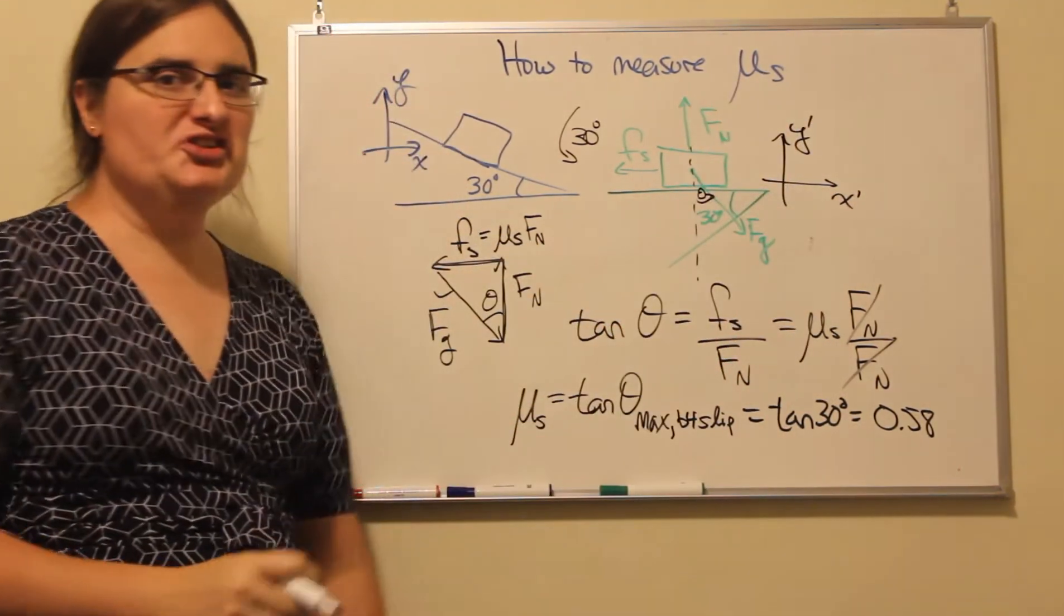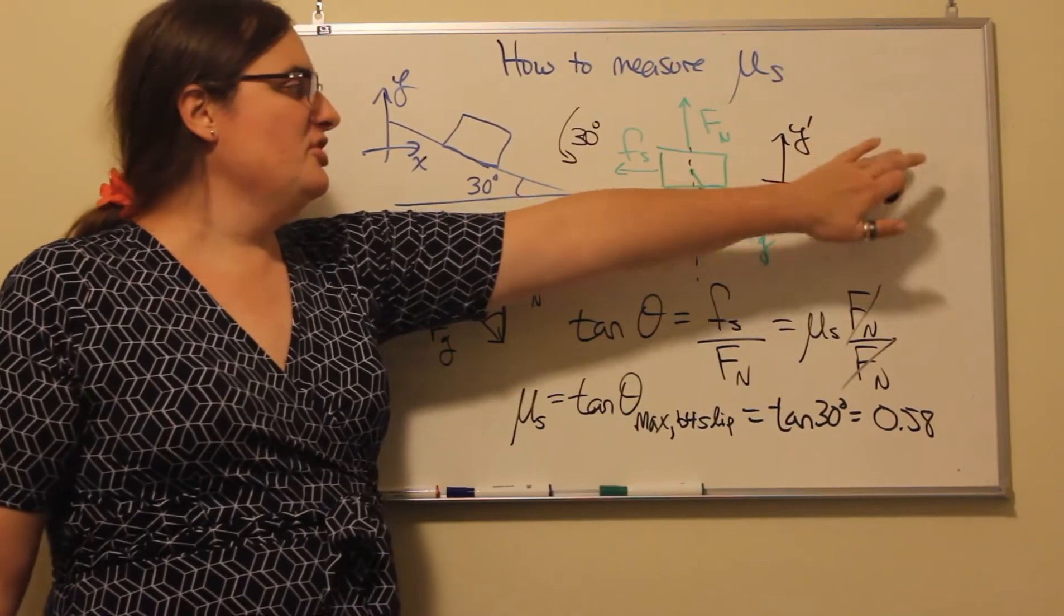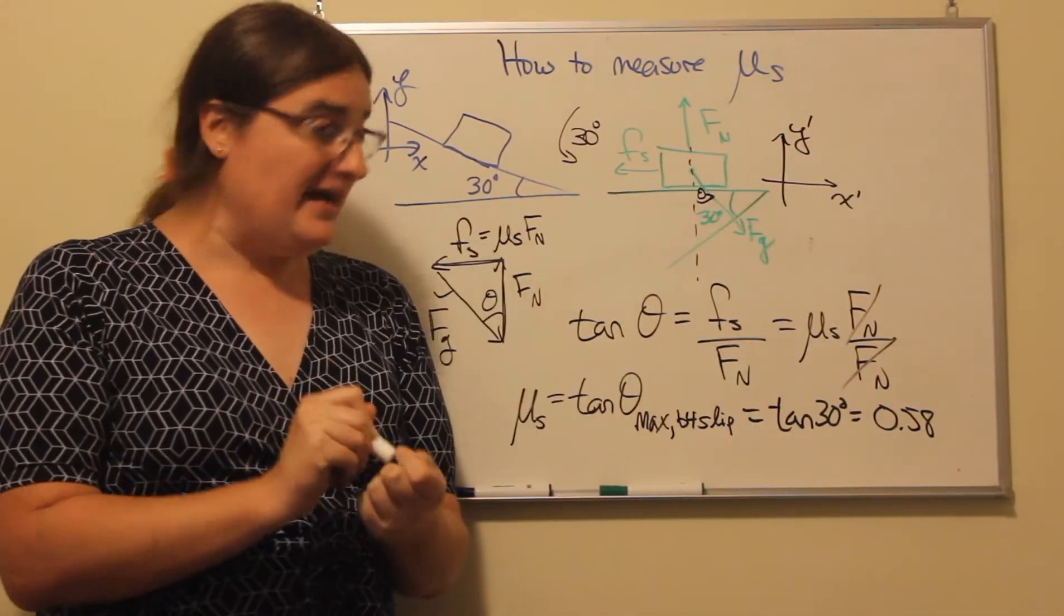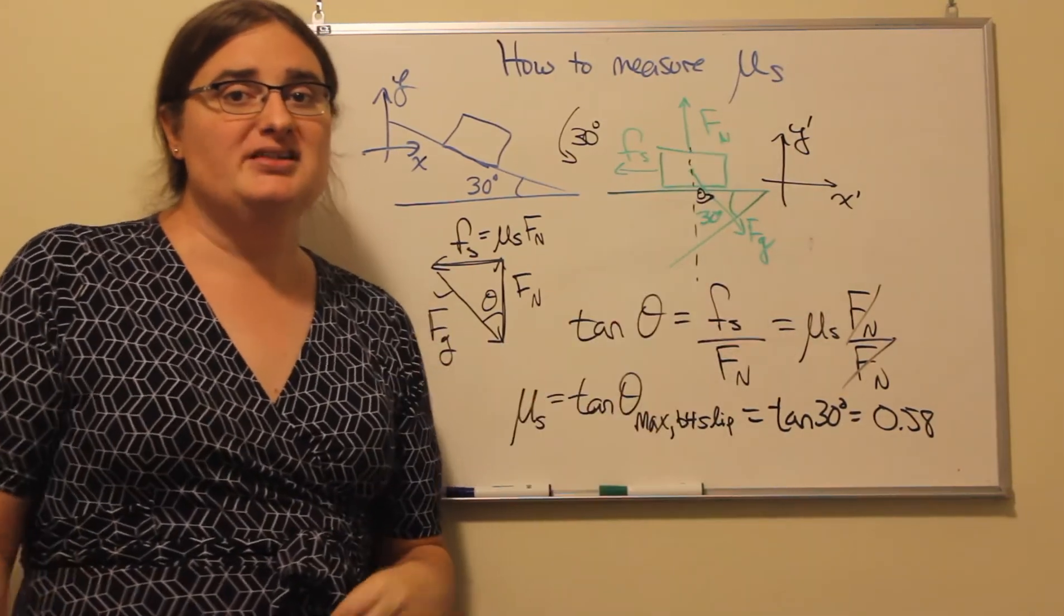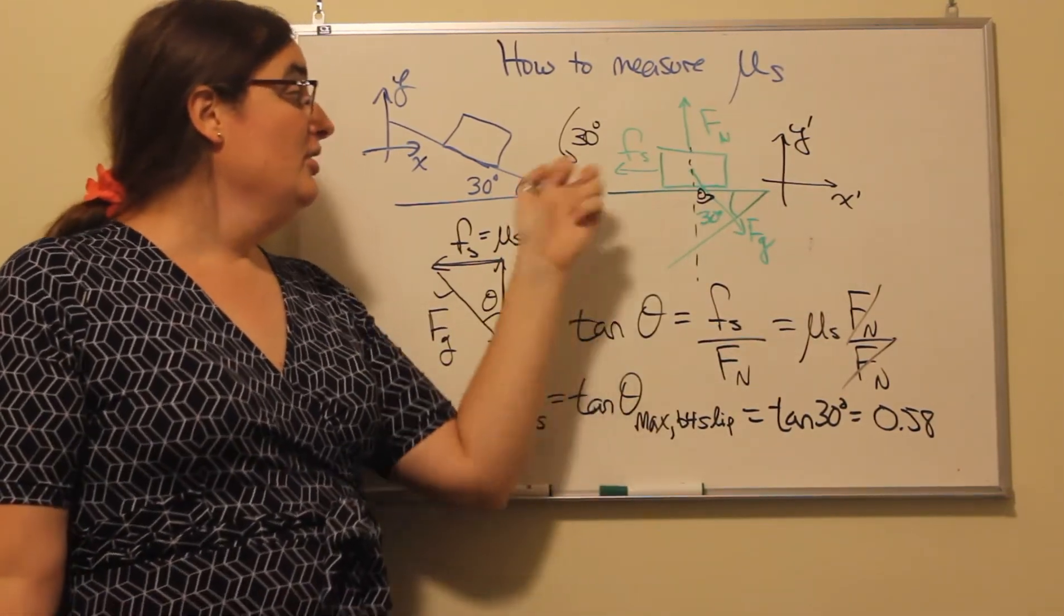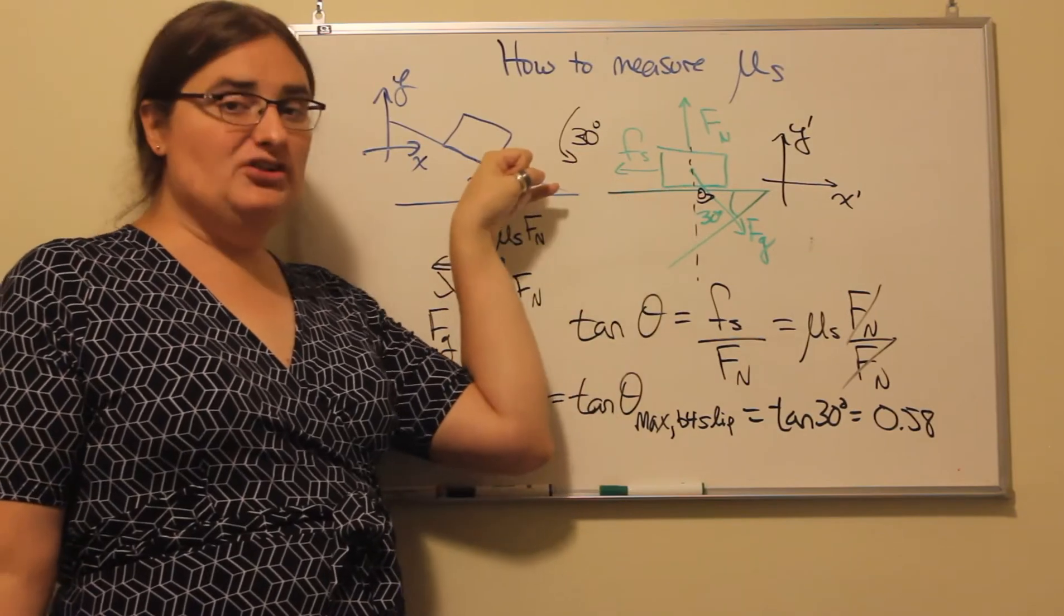Remember, in physics we never use prime to denote take the derivative of—that's a math thing. X prime here just means our new x direction, y prime means our new y direction. So x prime is the direction down the ramp and y prime is the direction normal to the ramp.